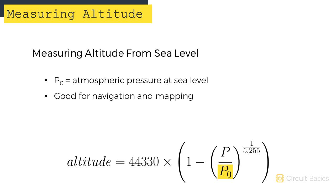The pressure you use for P0 depends on where you want to measure the altitude from. If you want to know your altitude from sea level, you can use the atmospheric pressure at sea level. You might do this if you're measuring altitude for navigation or mapping purposes, or to track your elevation along a trail.